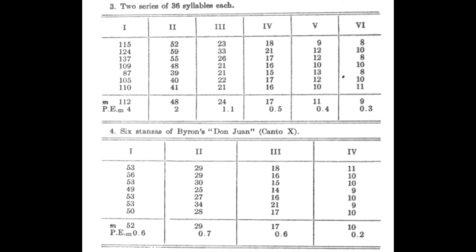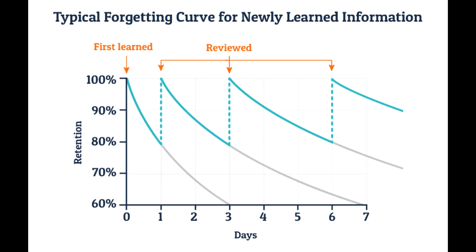Ebbinghaus' Memory Experiments — Nonsense Syllables. Ebbinghaus conducted his experiments using nonsense syllables, which were sequences of consonants and vowels with no inherent meaning, such as DAX, WIS, or ZOF — all of which mean nothing.